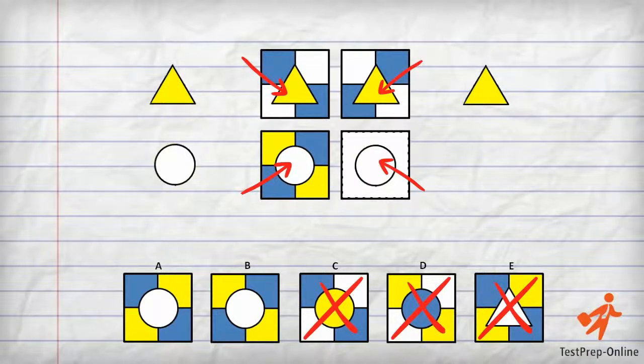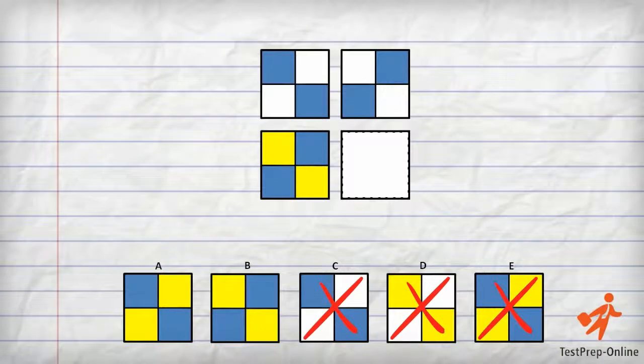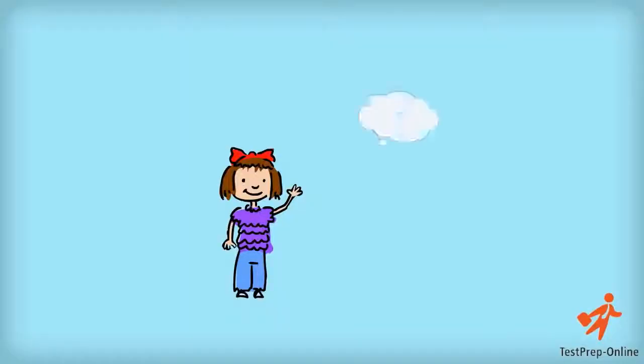Since the only differences between these answer choices is the background, let's focus on just the background colors of the analogy. Now look at the backgrounds in the two boxes of the top row of the example. These backgrounds go together in a certain way. Can you figure out how they go together?